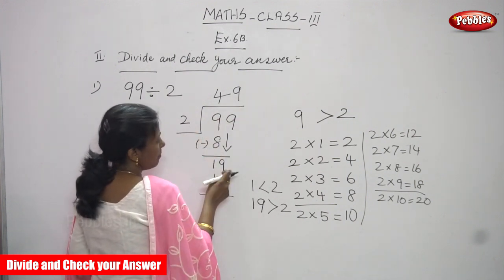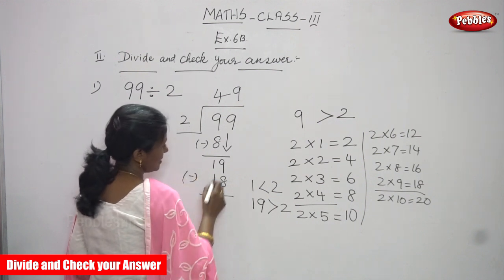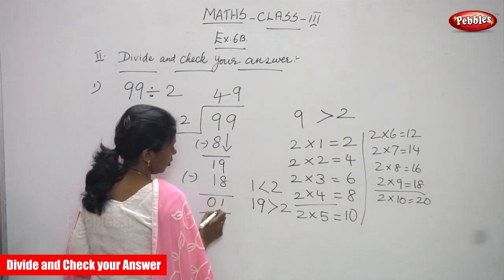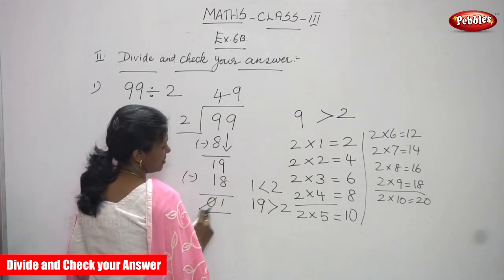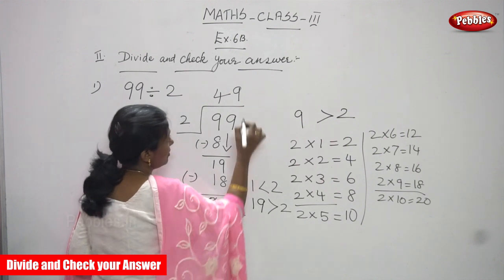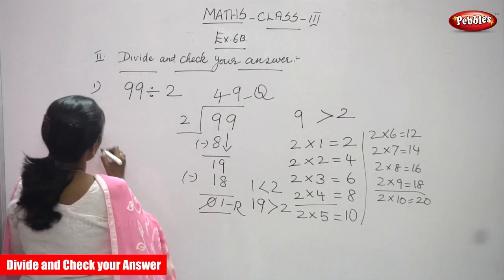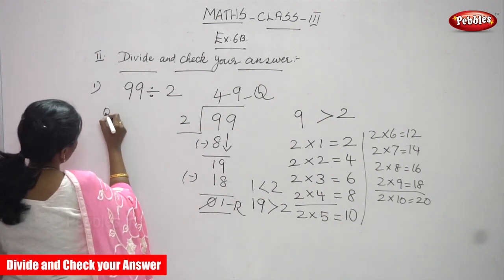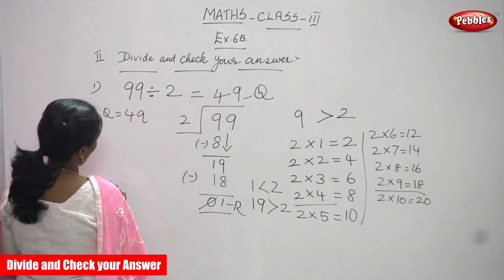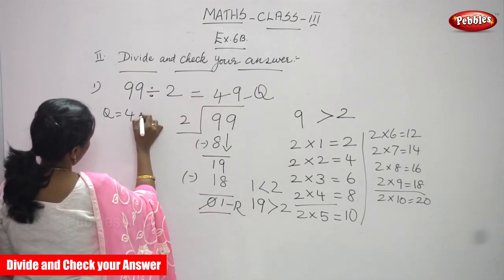You must write 18 below 19. Now subtract: 19 minus 8 equals 1, and 1 minus 1 is 0. This 0 is not considered. The remainder is 1 and the quotient is 49. So you know that the quotient is 49 — this is the right answer. The quotient is 49 and the remainder is 1.